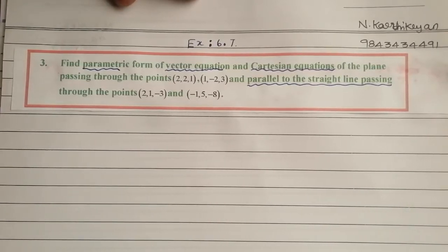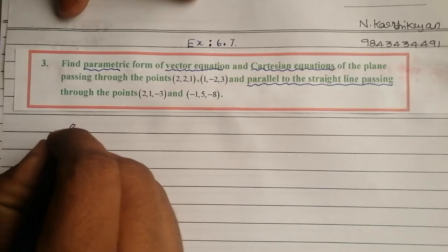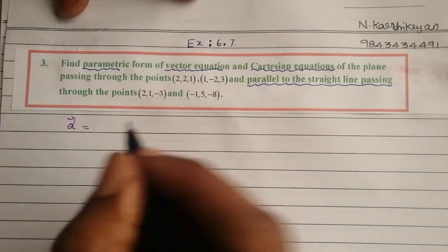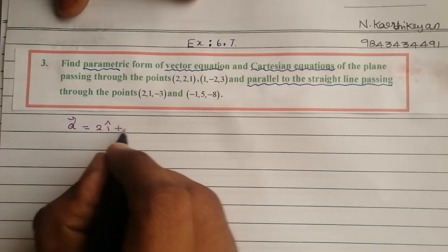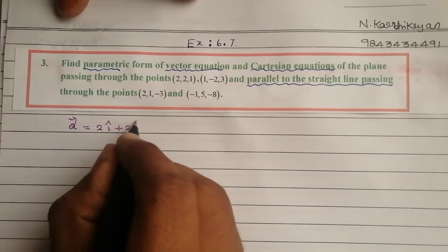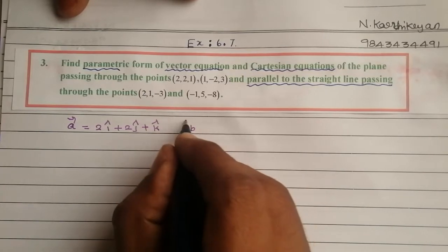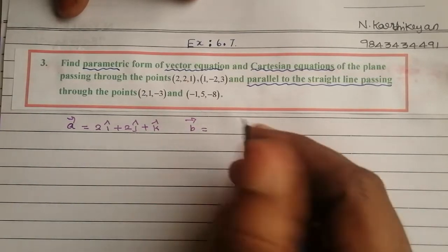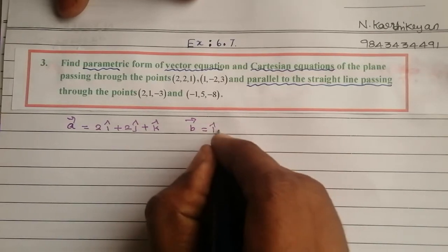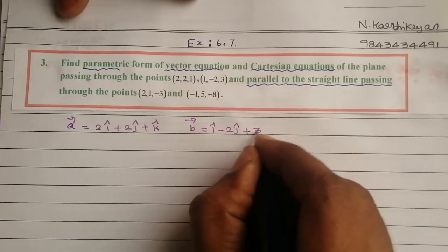First point, A vector equal to 2i-cap plus 2j-cap plus k-cap. Another vector, B vector equal to i-cap minus 2j-cap plus 3k-cap.